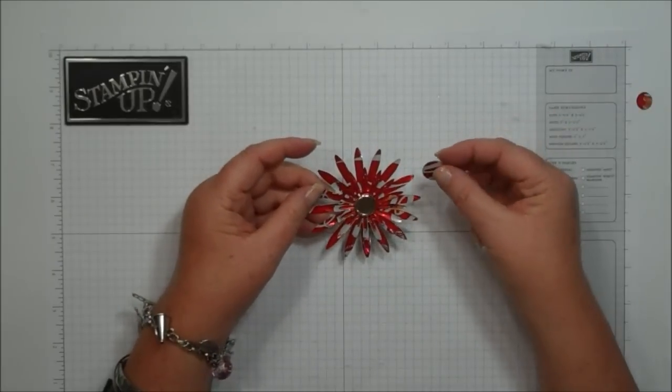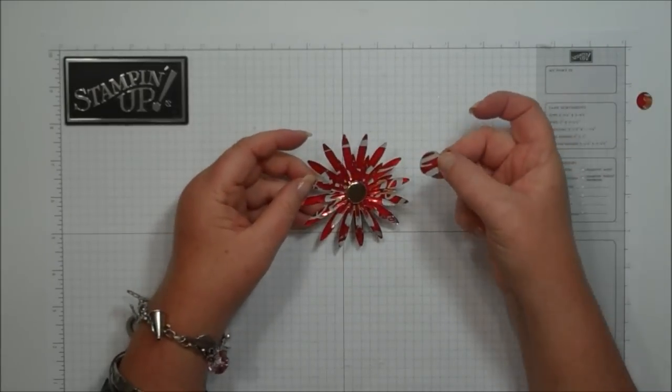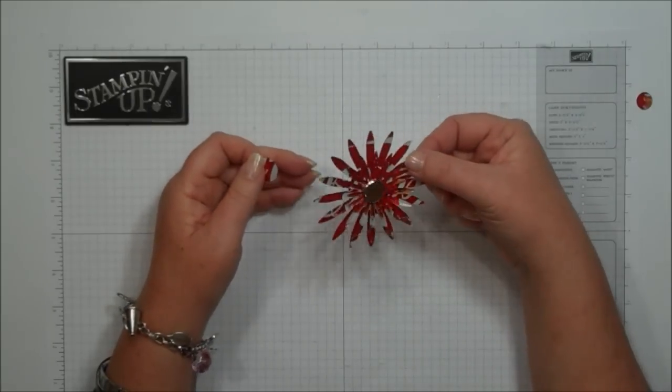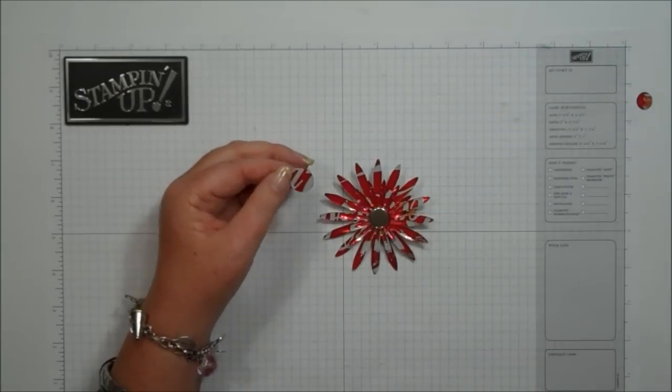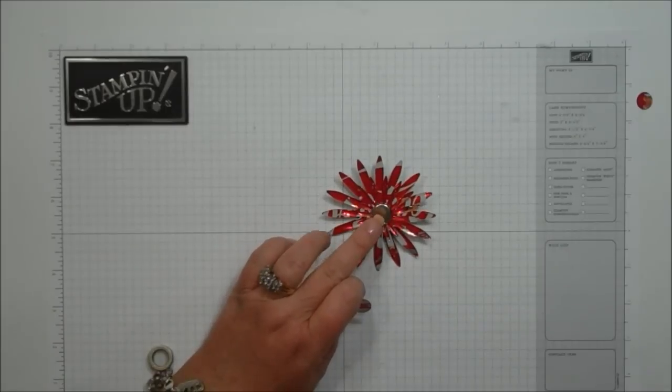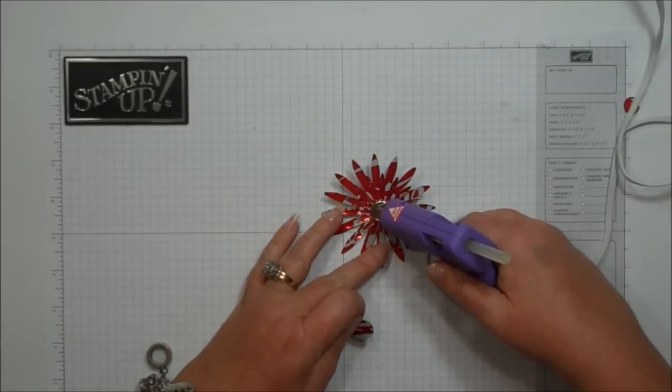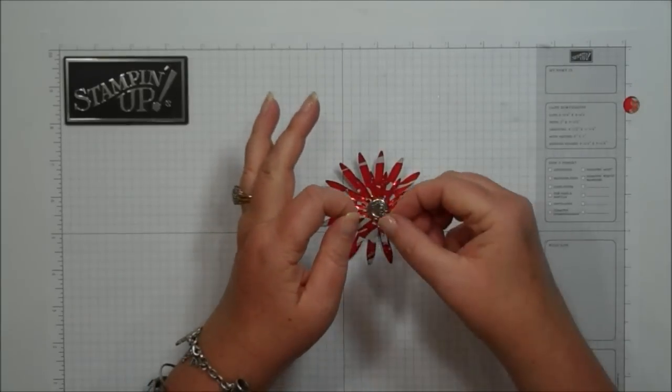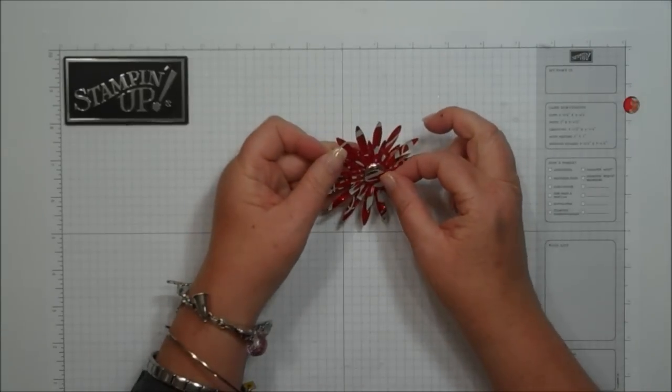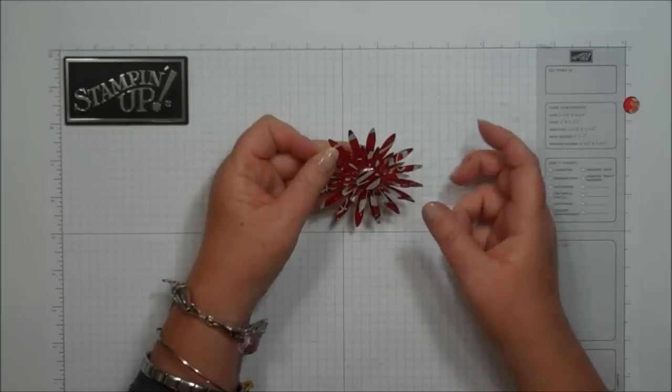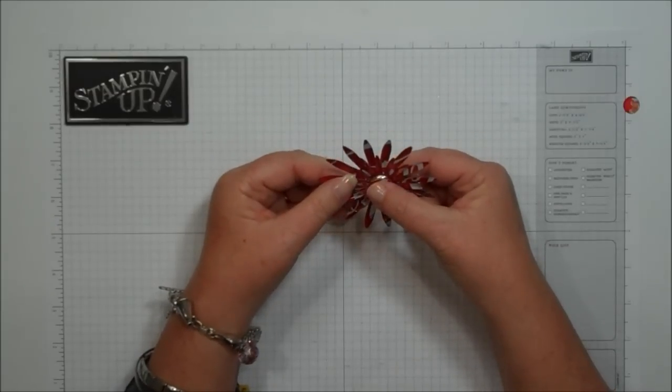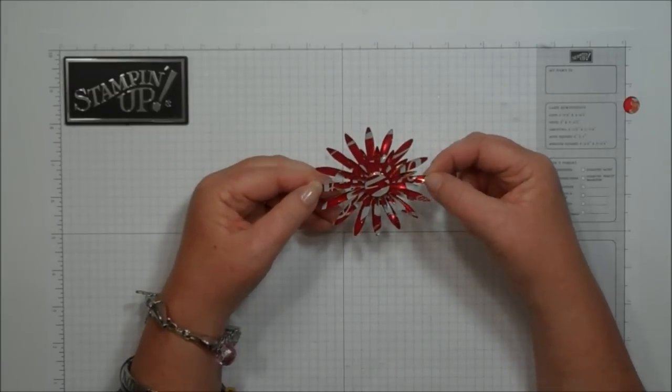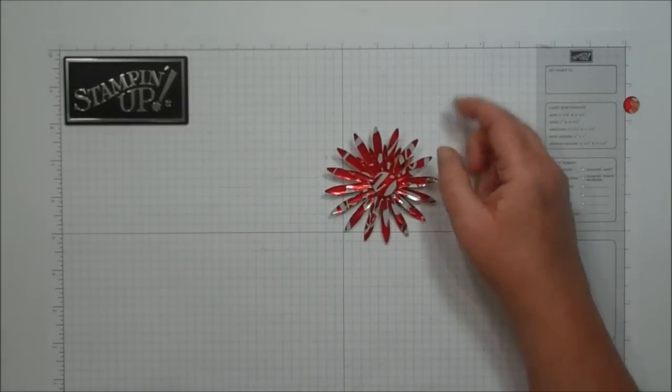So then the tip that Gina shared with us at club is she took the centers of the daisies. And then in this case it's silver, so it's still cute. But if you wanted to put a different colored brad and you didn't want that to show, you can just add some hot glue and just take that center and put it right over your brad. So it kind of conceals the color of it, so they will never know if you had a purple brad on there. So cute, love it.